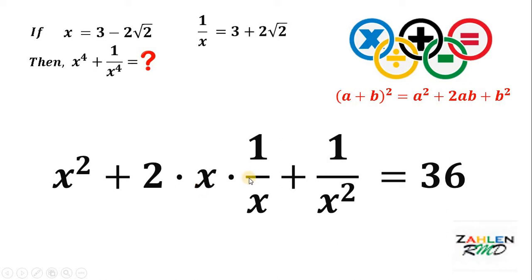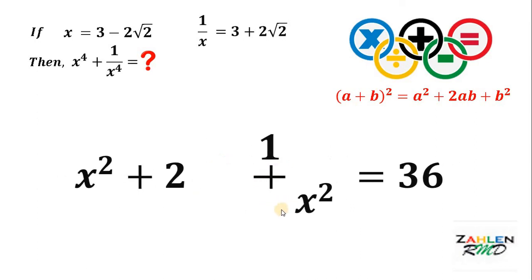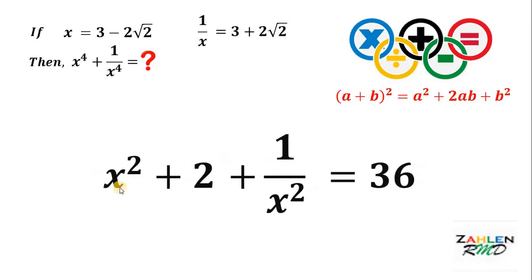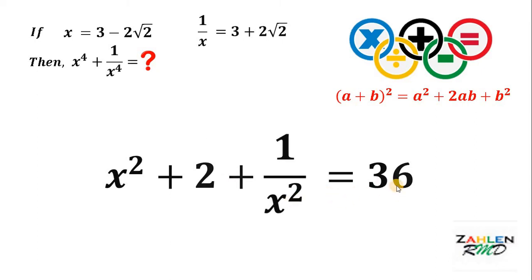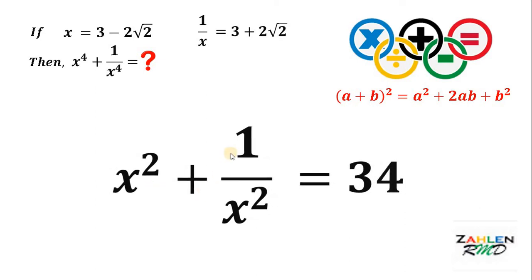Now, x times 1 over x is just 1, so that term simplifies to 2 times 1. We have x squared plus 2 plus 1 over x squared equals 36. Subtracting 2 from both sides gives us x squared plus 1 over x squared equals 34.